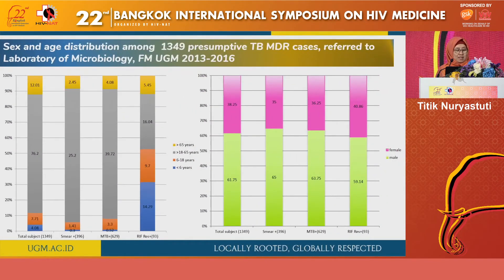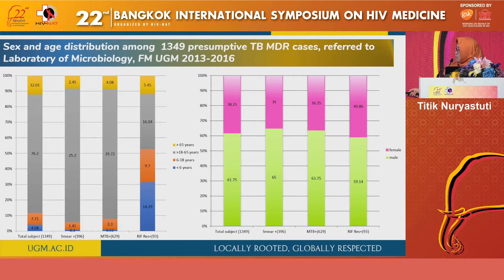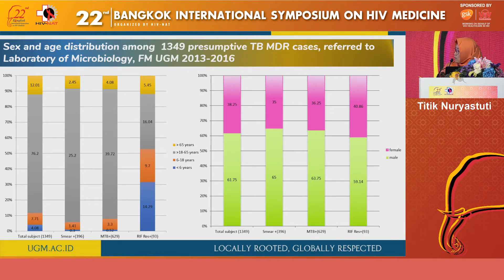Proceeding to results and discussion: among the total specimens, the majority of the population is in their reproductive age, about 76 percent, and most samples come from male patients. Almost one-third of the population — around 396 specimens — were AFB smear-positive. About 600 specimens were positive by GeneXpert for MTB/RIF, and among the MTB-positive cases, about 14 percent were rifampicin-resistant.